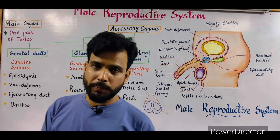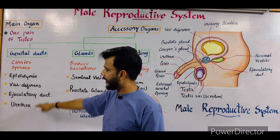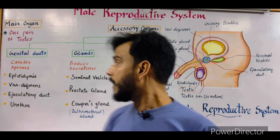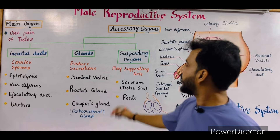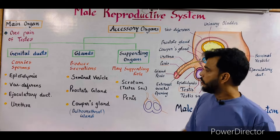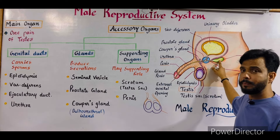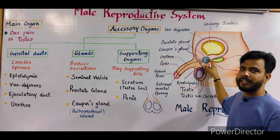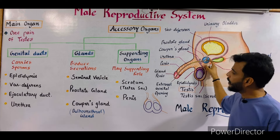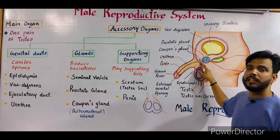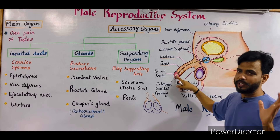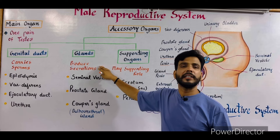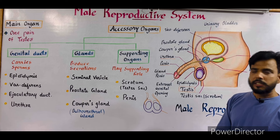A gland is a group of cells that secretes a special substance. In this system, three structures function as glands. First, the seminal vesicles produce about 75 percent of semen. Second, the prostate gland secretes a liquid forming about 25 percent of semen. Third, the Cowper's glands secrete an alkaline and sticky substance that neutralizes the acidic medium of the urethra. All these structures are categorized as glands producing different kinds of secretions.